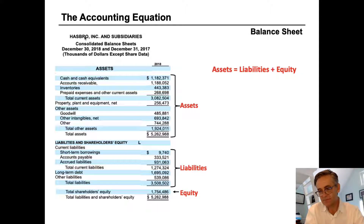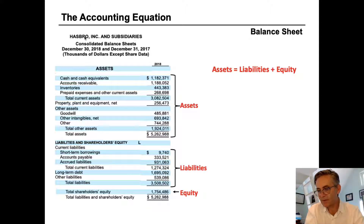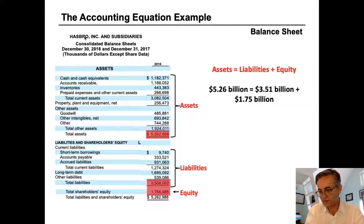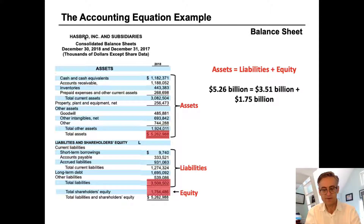In the final section, shareholders' equity — which is the same as owner's equity you might see on other balance sheets — totals $1.75 billion. Liabilities and equity added together equal total assets, and this is what we mean by 'balance.' So the numbers in balance are: $5.262 billion in total assets equals $3.5 billion in liabilities plus $1.754 billion in equity. All balance sheets are structured like this and express the accounting equation.